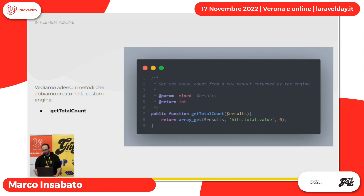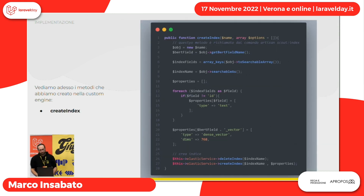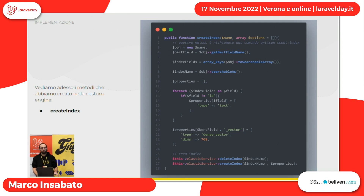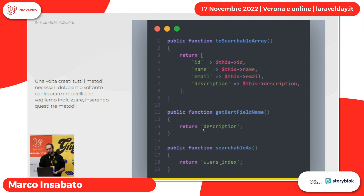Infine abbiamo get_total_count che dà il numero totale di elementi trovati, flush che viene lanciata quando lanciamo il comando artisan scout:flush, e il comando fondamentale create_index, richiamato da artisan scout:index. Create_index serve per creare l'indice: passiamo il modello da indicizzare e in base alle impostazioni che abbiamo dato all'interno del modello verrà creato l'indice con quelle impostazioni. L'ultima cosa è andare nel modello che vogliamo indicizzare, aggiungere Use Searchable, la funzione toSearchableArray con le cose da indicizzare, getBertFieldName per dichiarare quale campo rendere vettore per la ricerca, e searchableAs per definire il nome dell'indice.